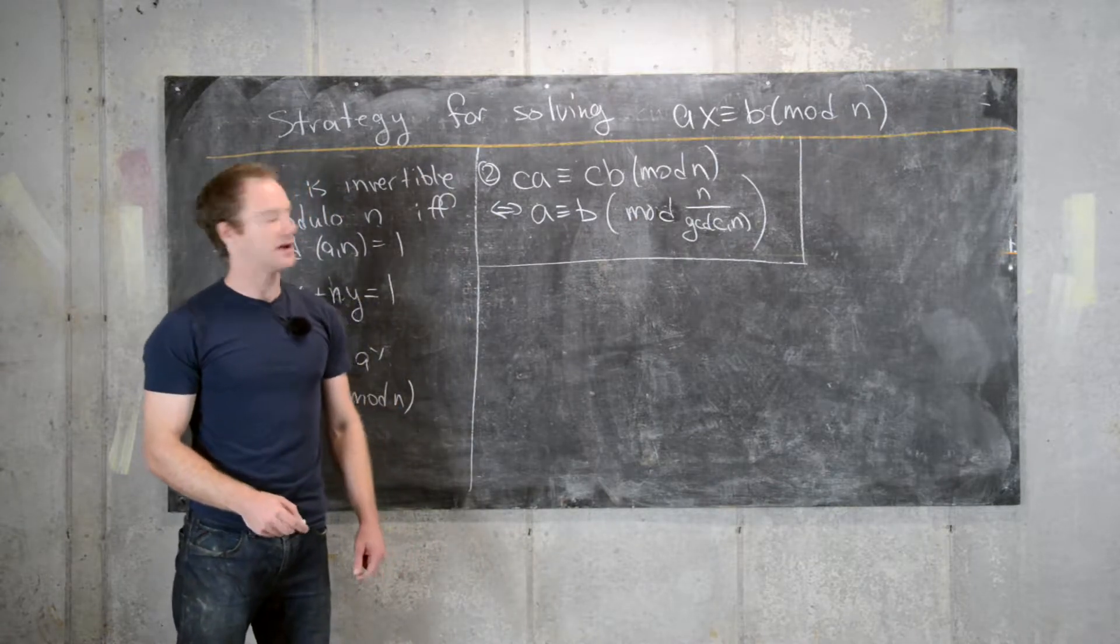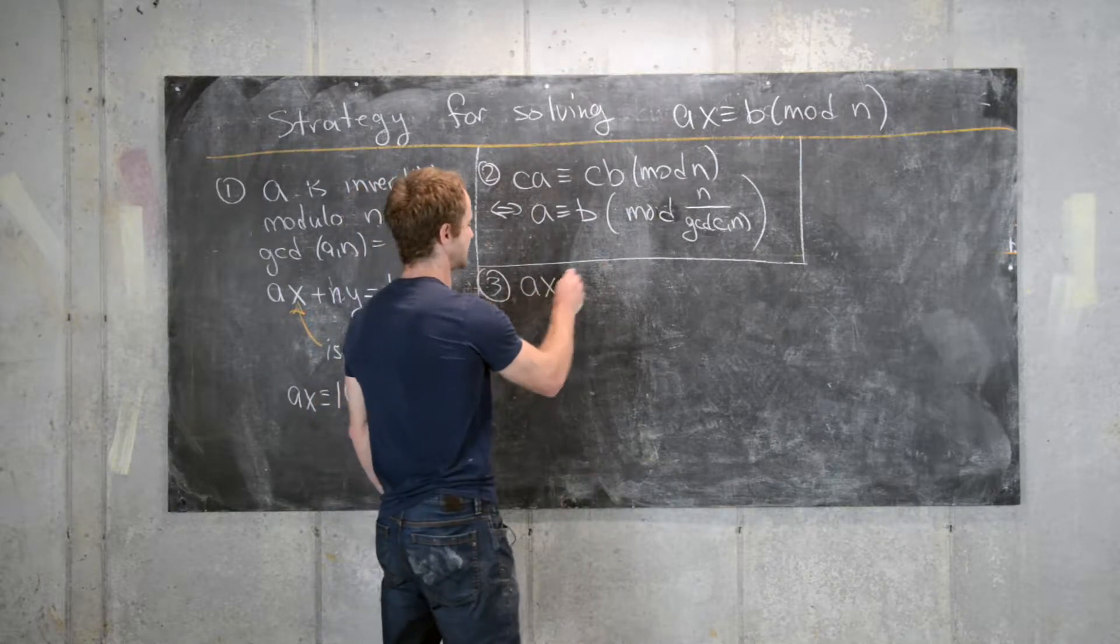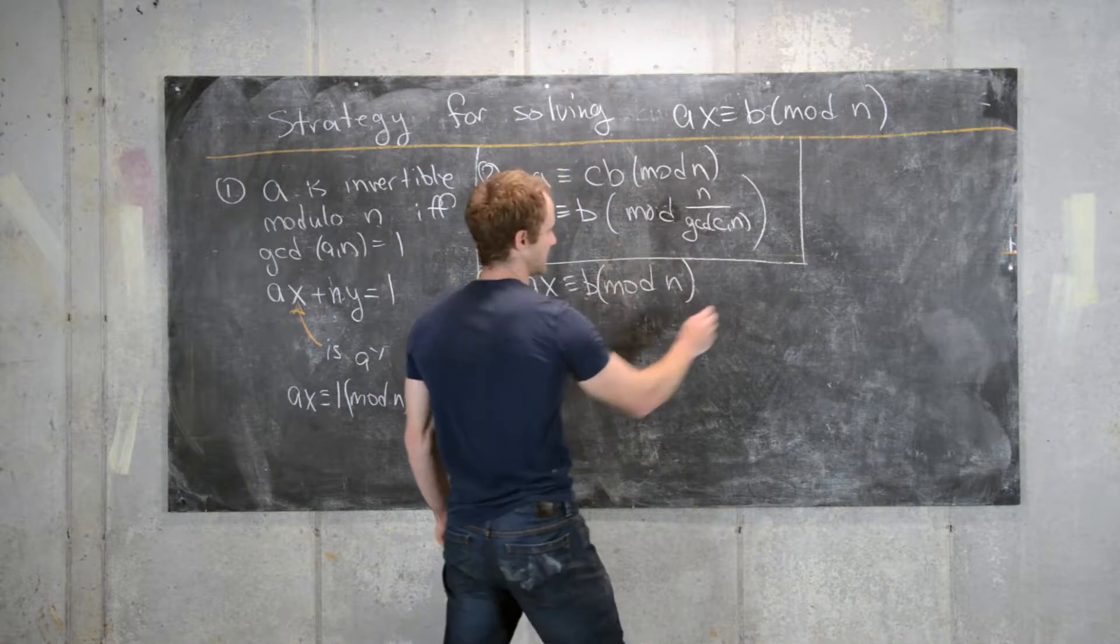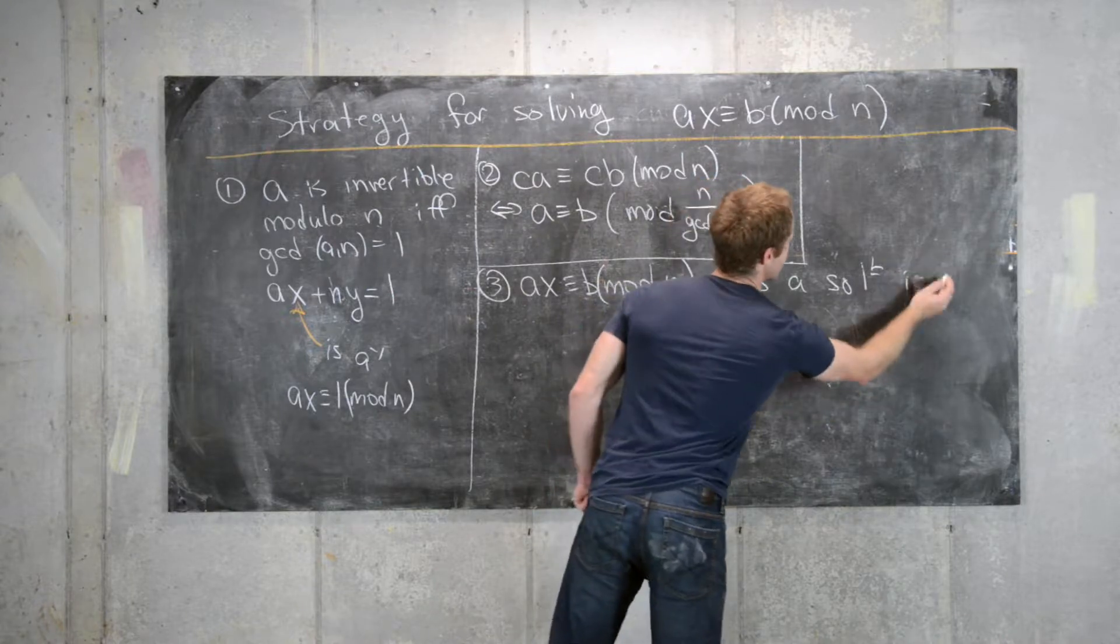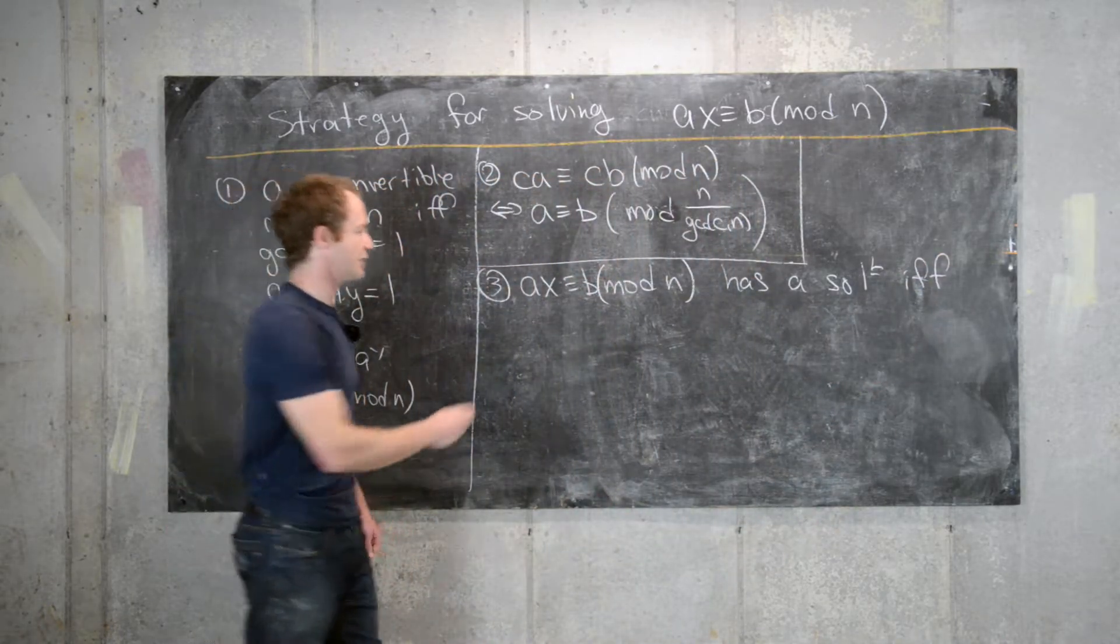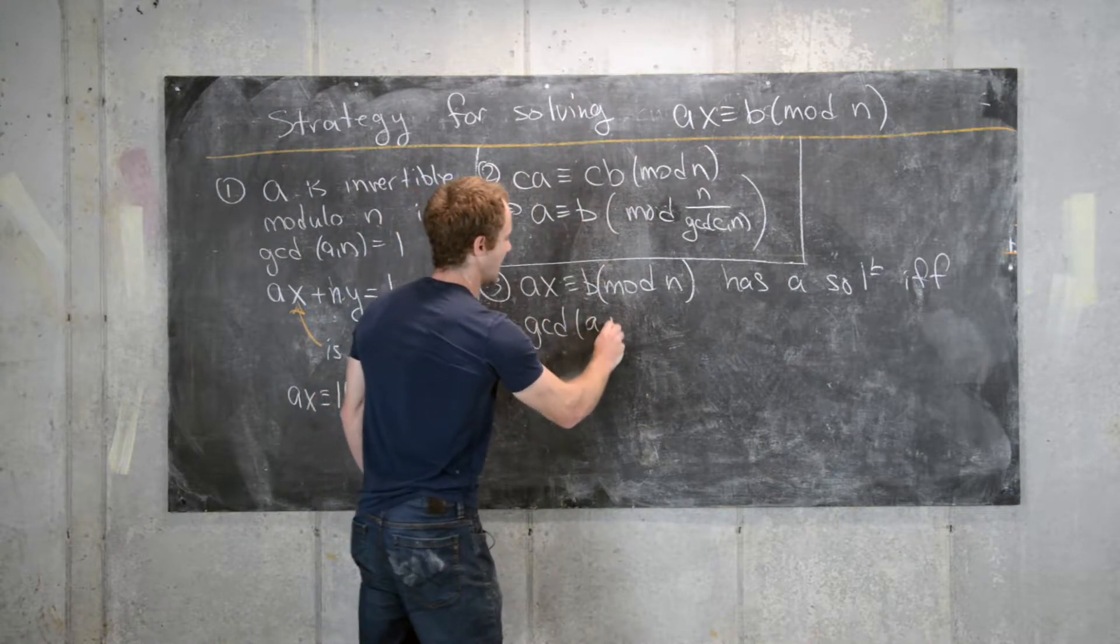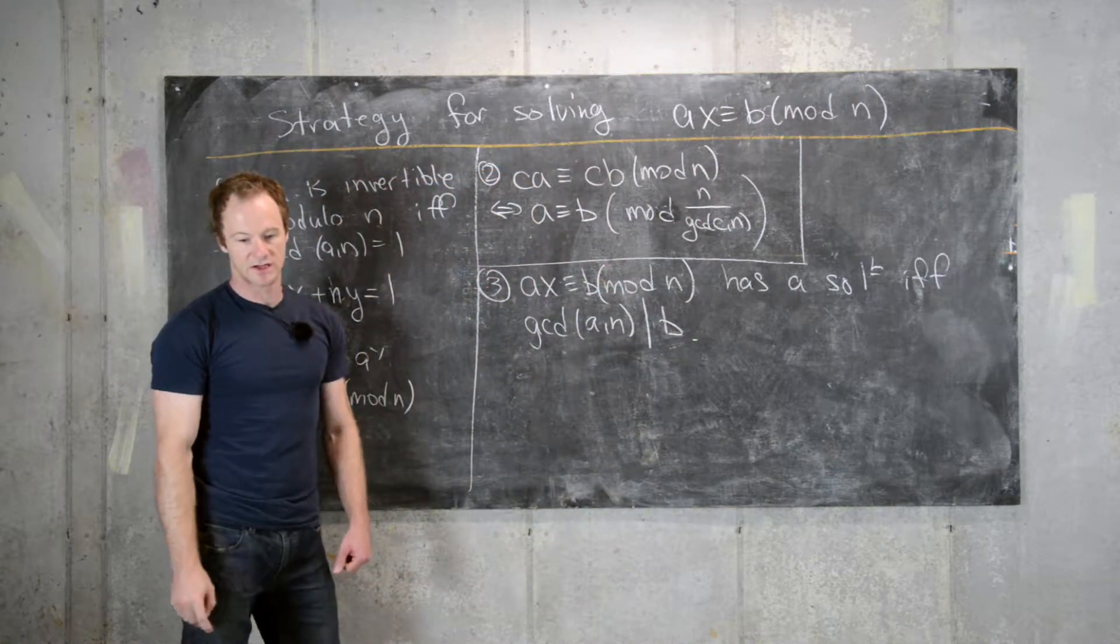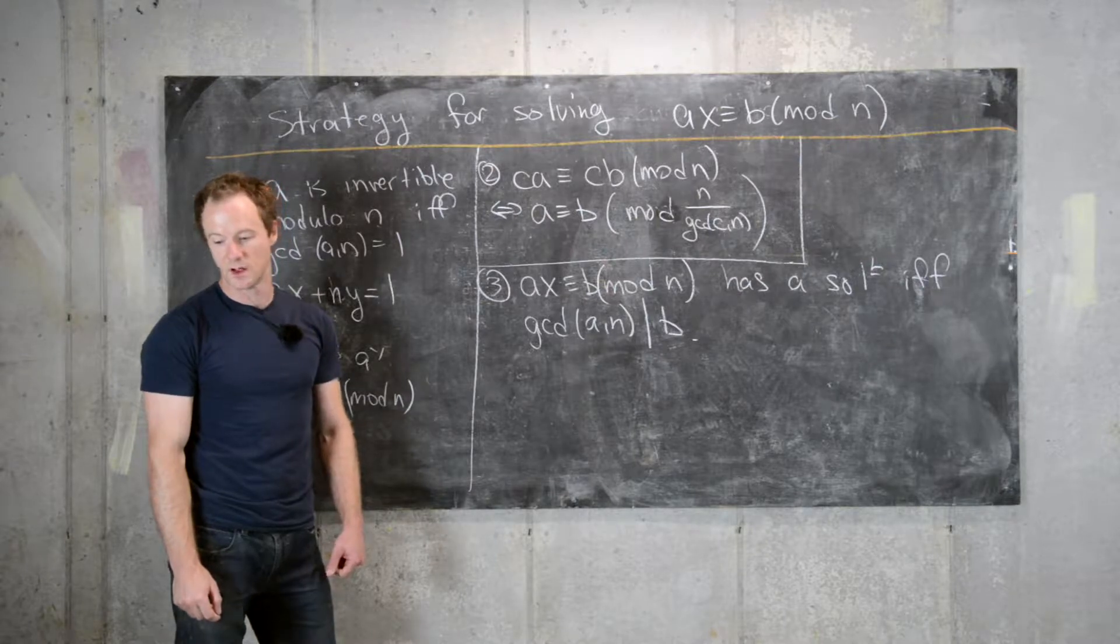So number three, Ax is congruent to B mod n has a solution if and only if the GCD of A and n divides B. So that determines when there is a solution.